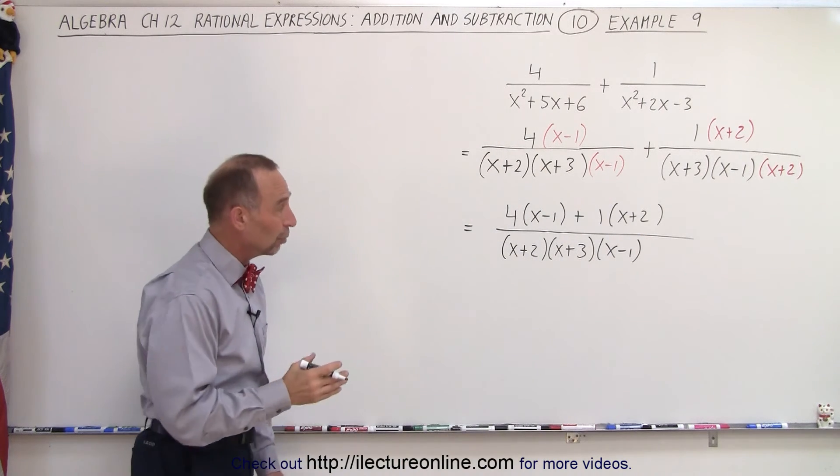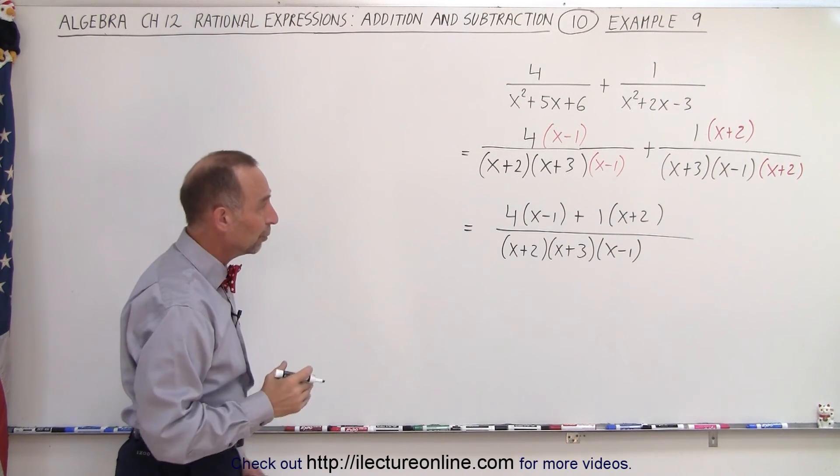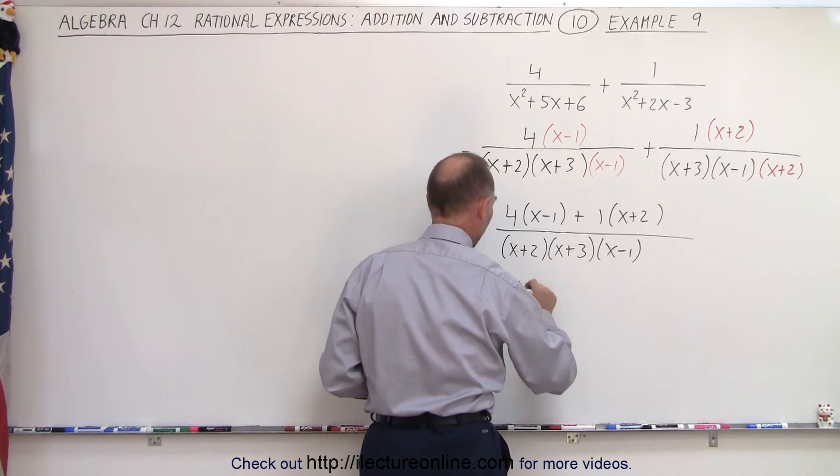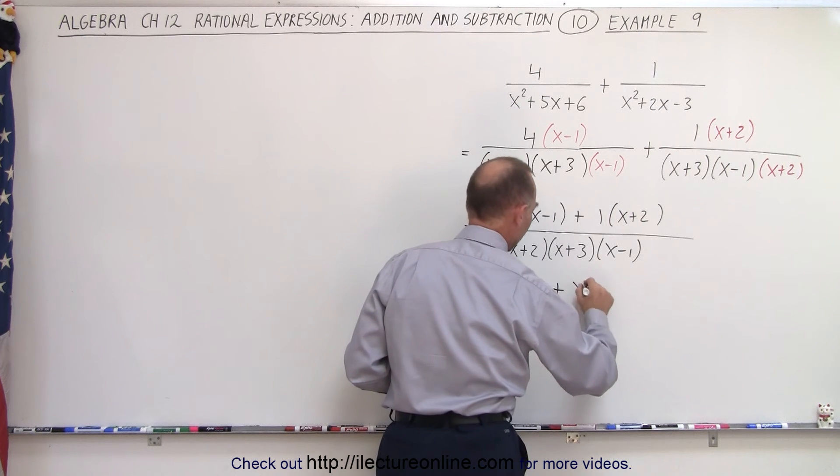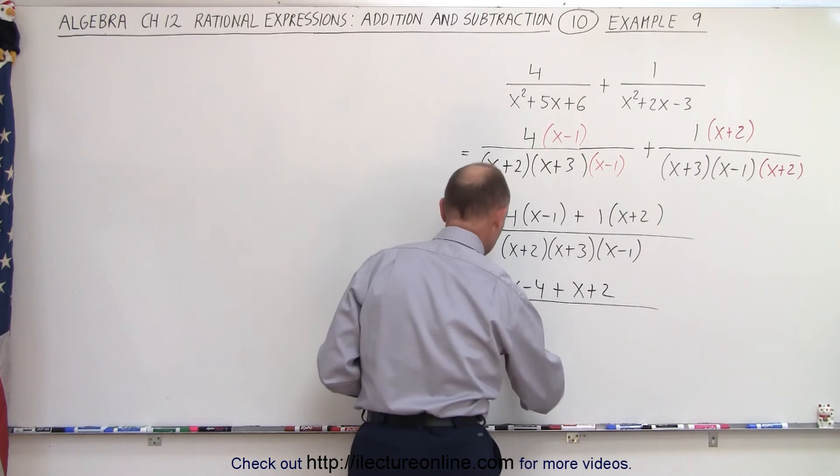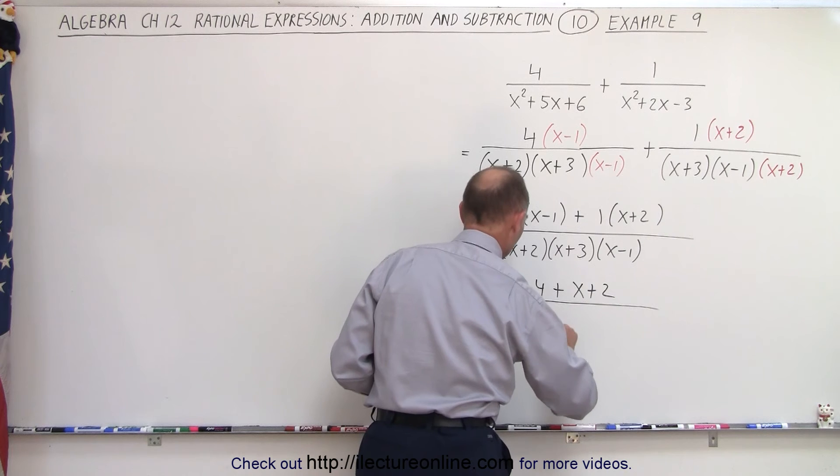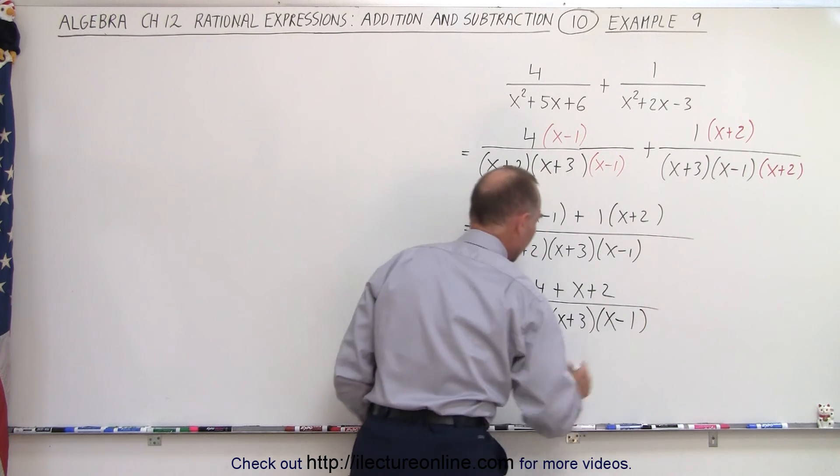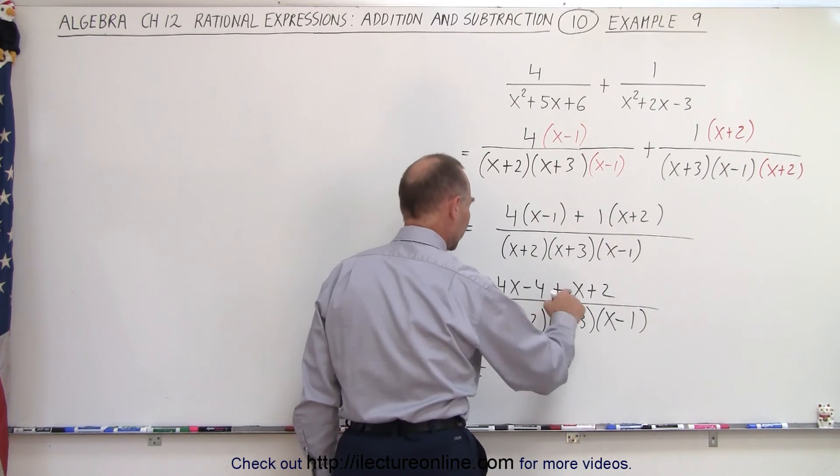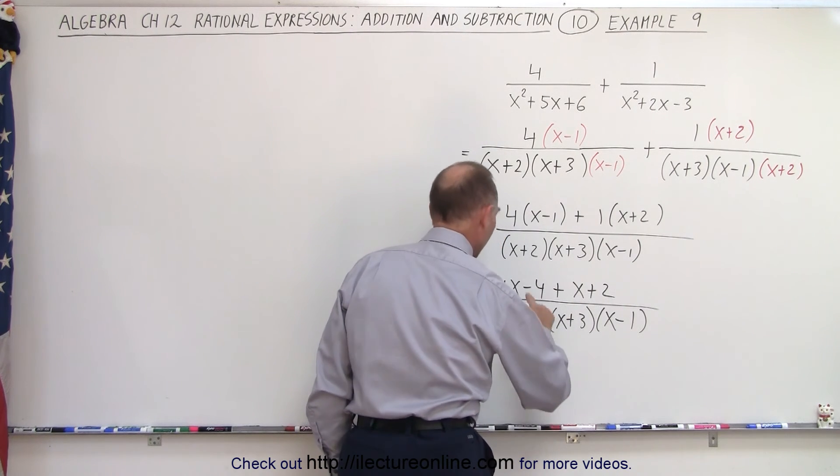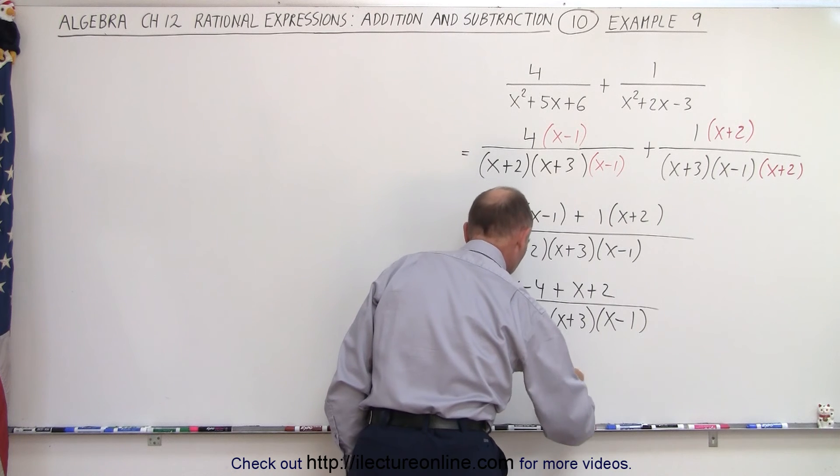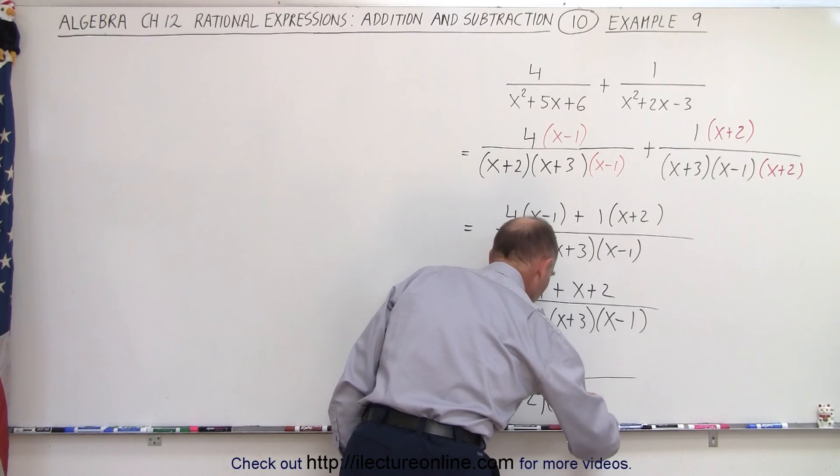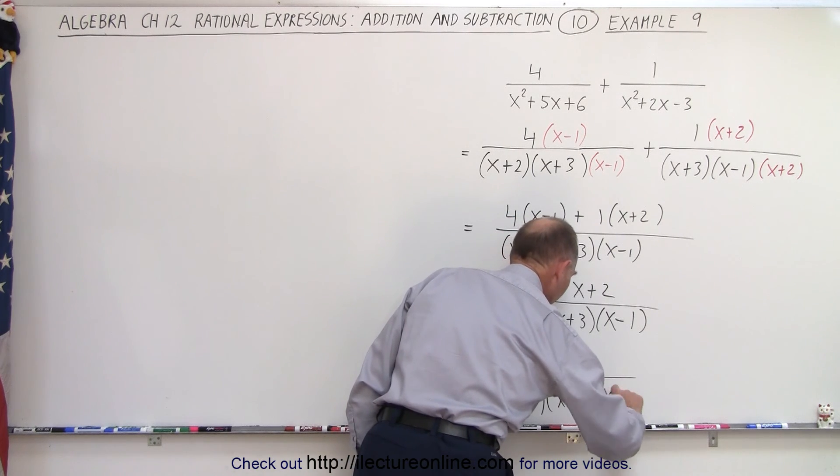Now again, what we have to do is multiply everything in the numerator and collect common terms. So this is equal to 4x minus 4 plus x plus 2, all divided by the same common denominator. And finally we have to collect common terms, 4x plus x which is 5x minus 4 plus 2 which is minus 2, all divided by x plus 2, x plus 3, and times x minus 1.